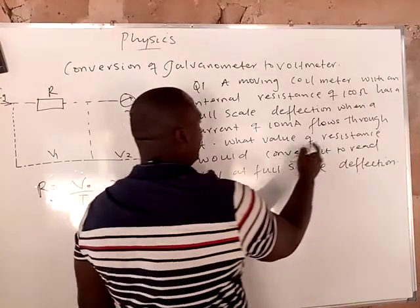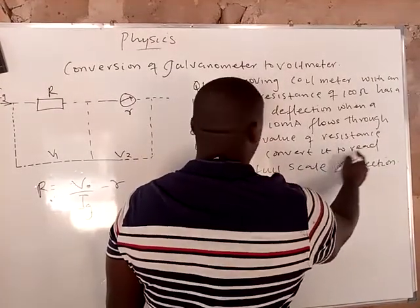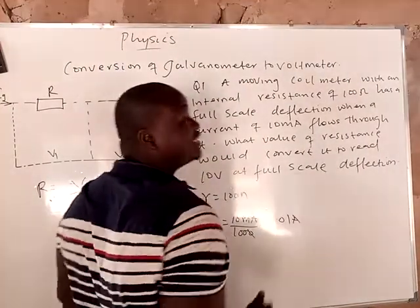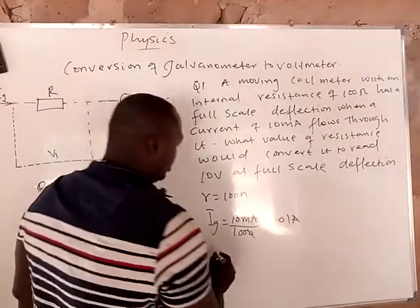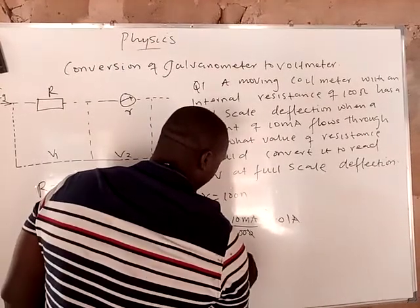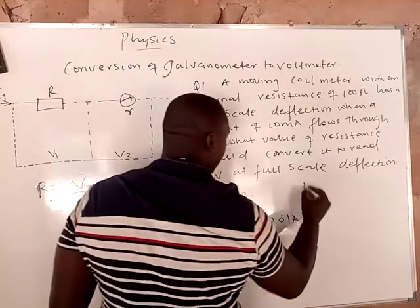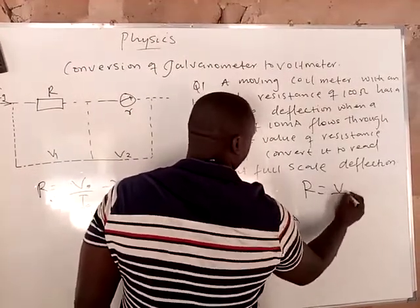What value of resistance would convert it to read 10 volts at full scale deflection? So we have our voltage to be 10V. Now we already know that R = V/Ig - r.